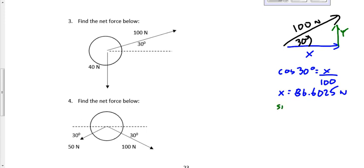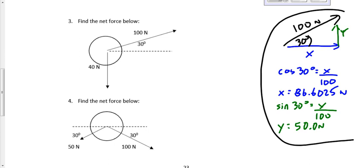The Y component, we're going to say sine 30 degrees equals opposite over hypotenuse. And the Y component there works out to be 50.0 newtons exactly. We box this off because that's what we do just to make it a little tidier here. And then sometimes I like to replace this 100 newtons with 86.6025 and 50 newtons this way. And then just scratch this out or erase it. It's gone, it's dead to us now.